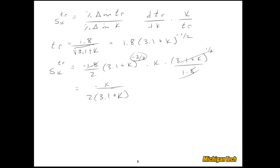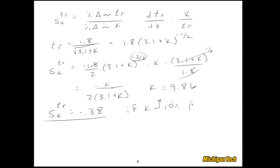Letting k equal 9.86, the sensitivity of rise time with respect to k is about negative 0.38. This means that if k goes up by 10 percent — from 9.86 to about 10.85 — the rise time is going to go down by 3.8 percent. That is, the rise time goes from 0.5 down to about 0.48 seconds — a small change of 0.02, but potentially significant depending on how important that design objective is.